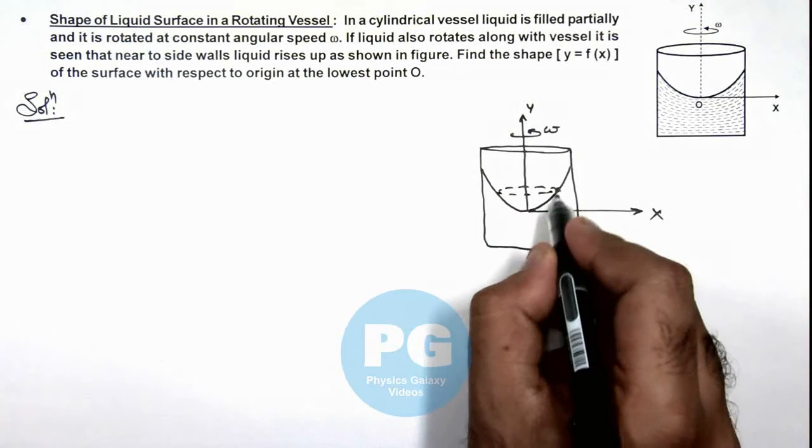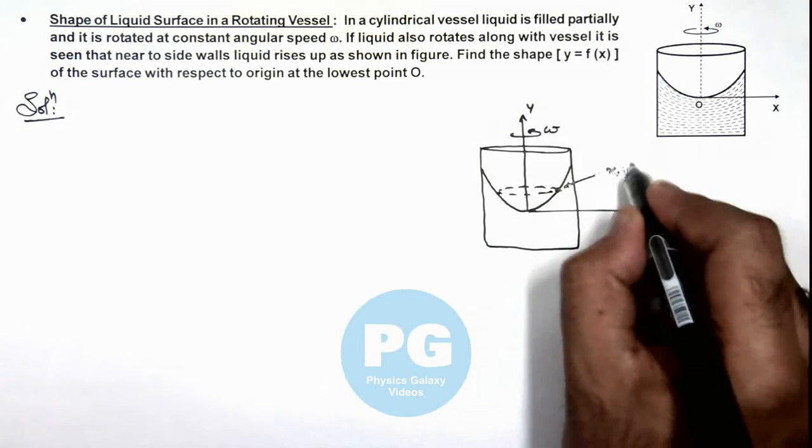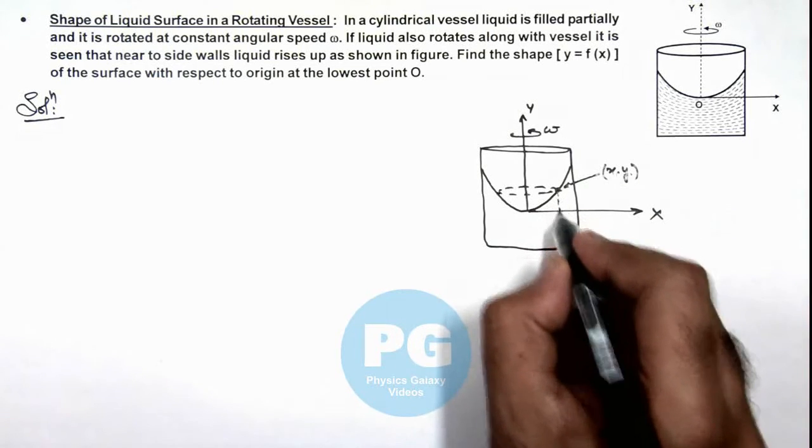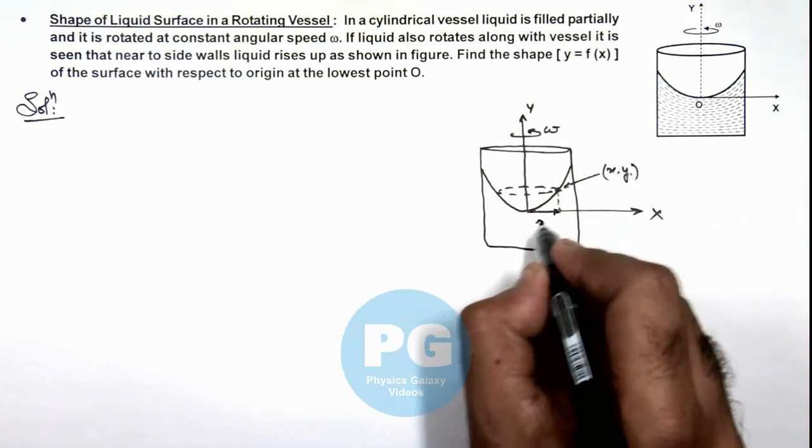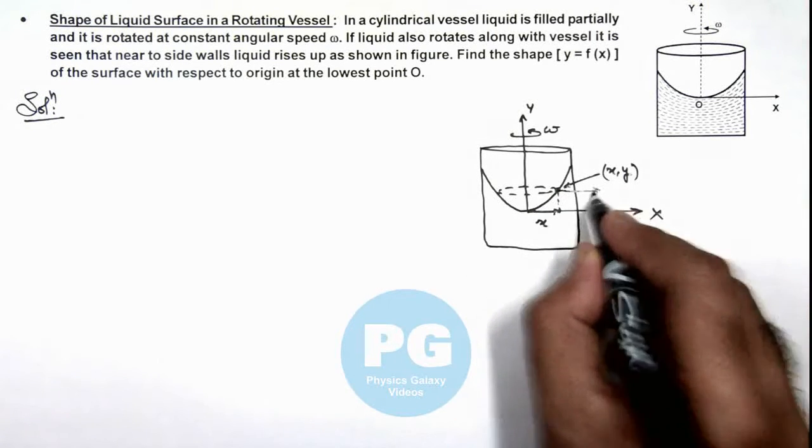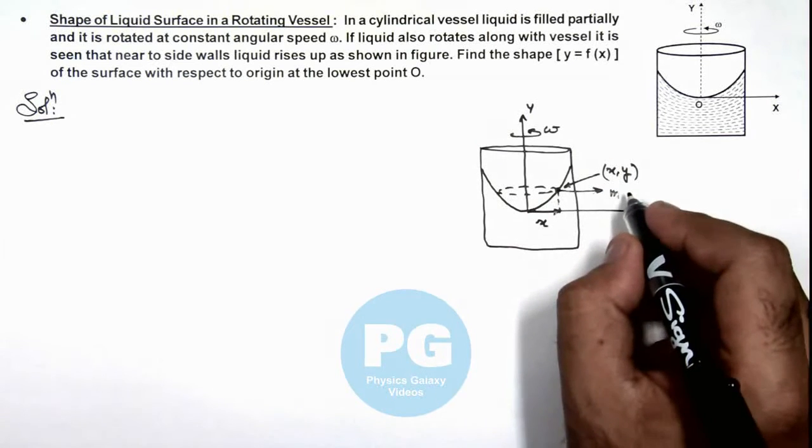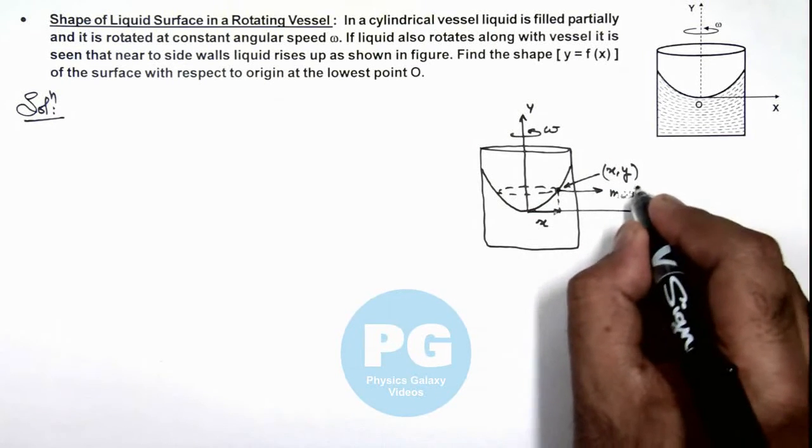Say of radius x, this point having coordinate (x, y). In this situation we can consider this would be revolving in a circle of radius x. The particle would be experiencing an outward centrifugal force in the frame of this container, m*omega^2*x.